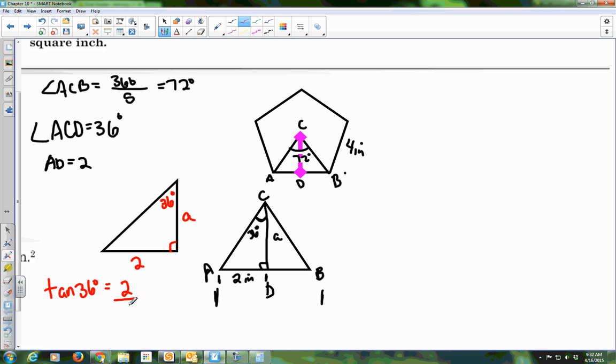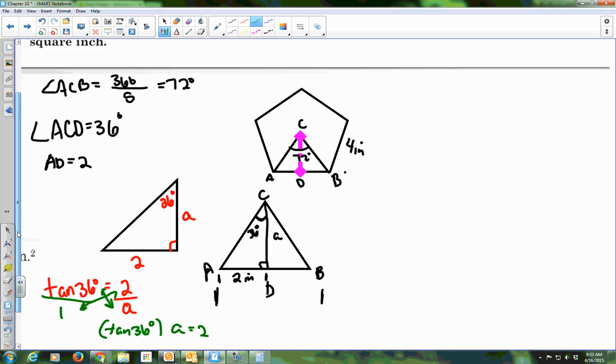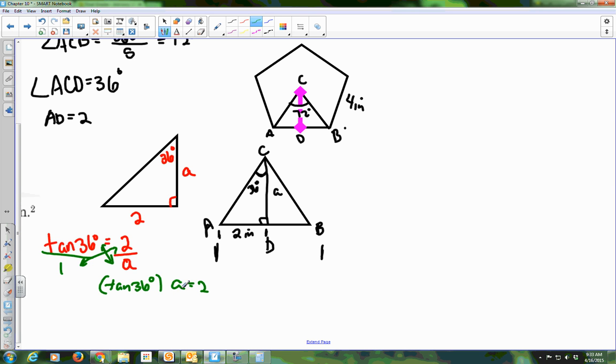So it's equal to 2 over A. I'm going to cross-multiply. Put this over 1. I get tangent of 36 degrees times A equals 2. And then if I'm solving for A, I divide both sides by tan 36.